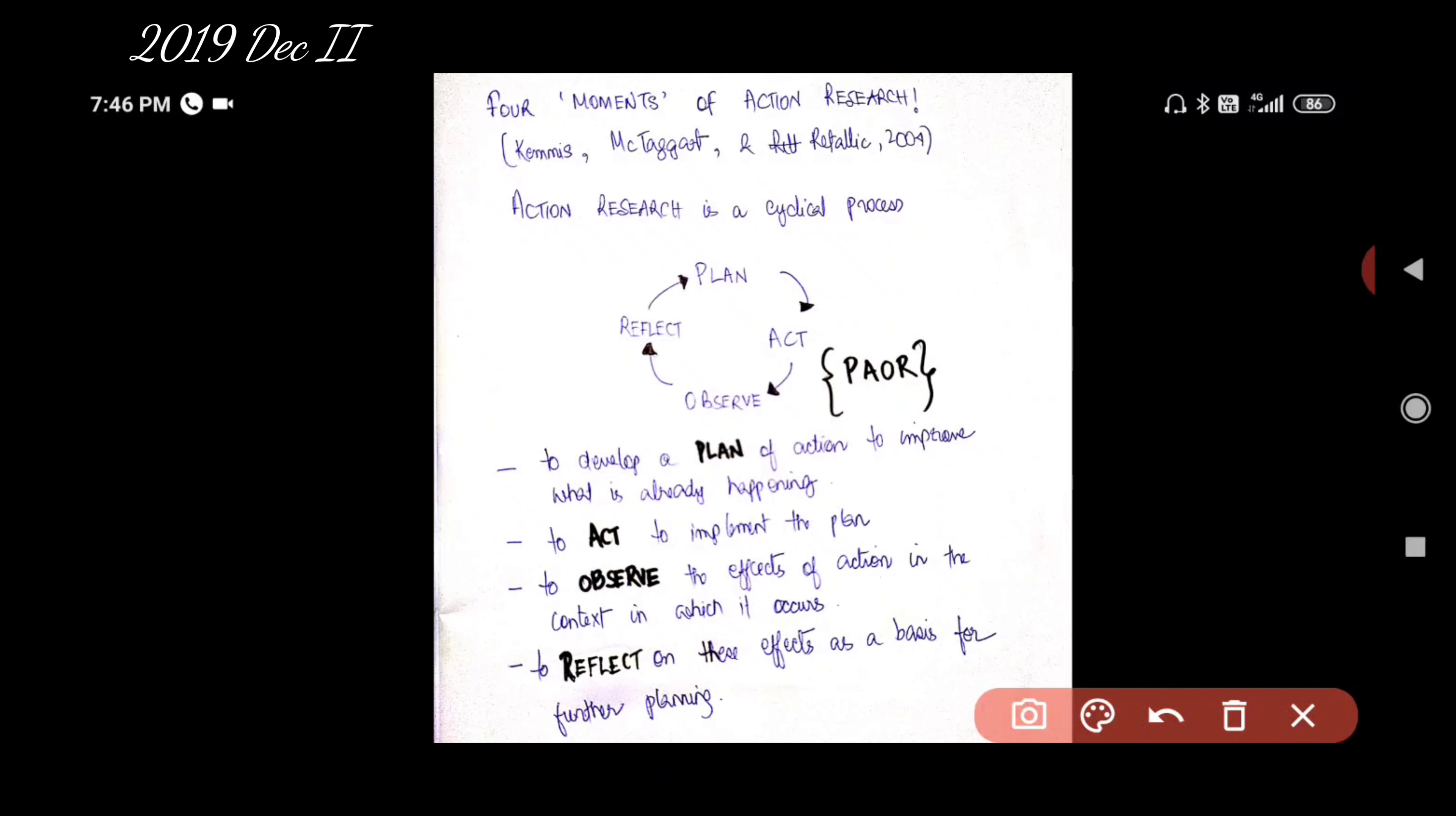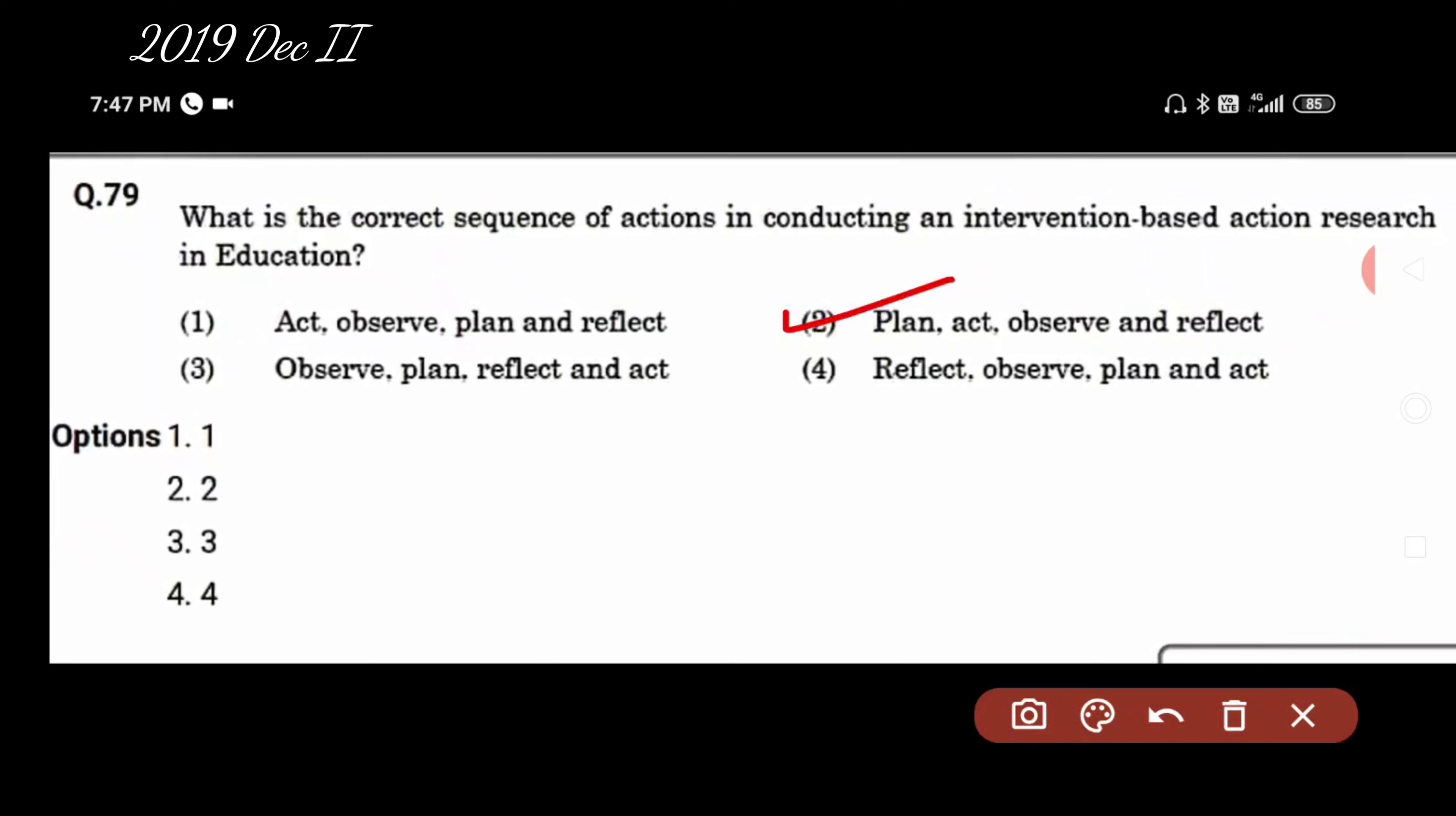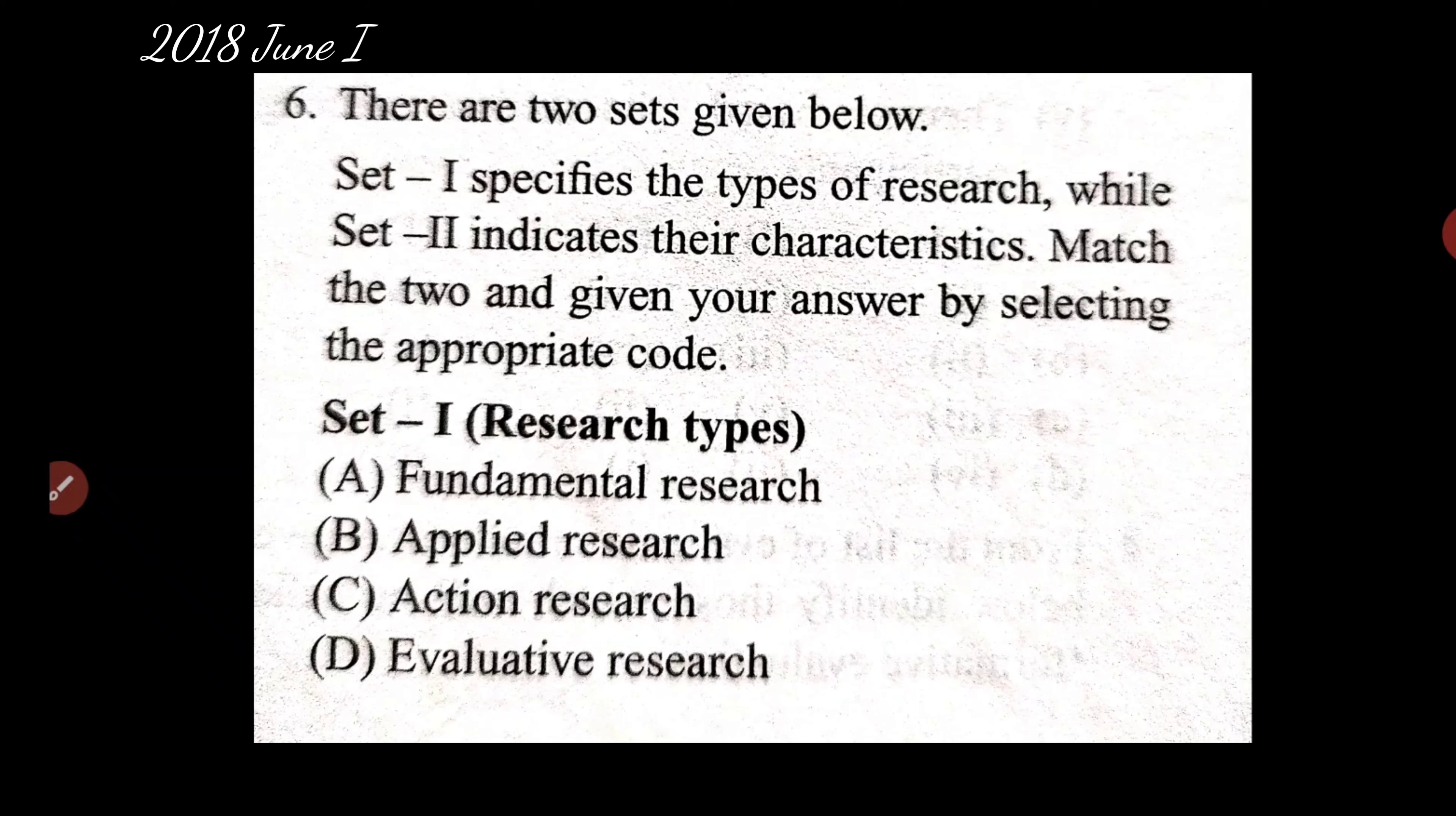Four moments of action research. This was given by Kemmis, McTaggart, and Retallick in 2004. Action research is a cyclical process as I've already mentioned before - it is called the cycle of inquiry. It starts off with developing a plan of action to improve what is already happening, and after that you act to implement that plan. After that you have to observe the effects of those actions, and then after observing the effects you reflect - means to think deeply on those effects as a basis for further planning. Always remember P-A-O-R: plan, action, observe, reflect. So our answer will be two.